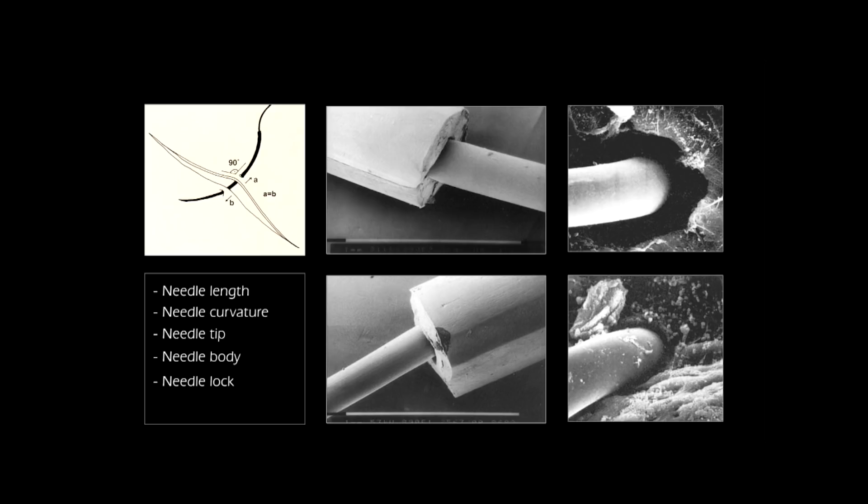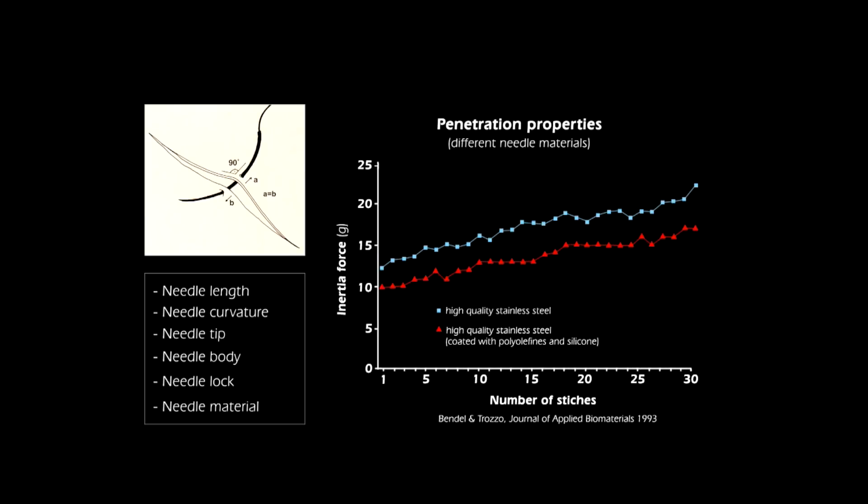It's not only the configuration and length of the needle that matter — the material, namely the steel, also influences needle behavior. Some steels allow more flexibility, meaning the needle will bend less when handled compared to other needle types.